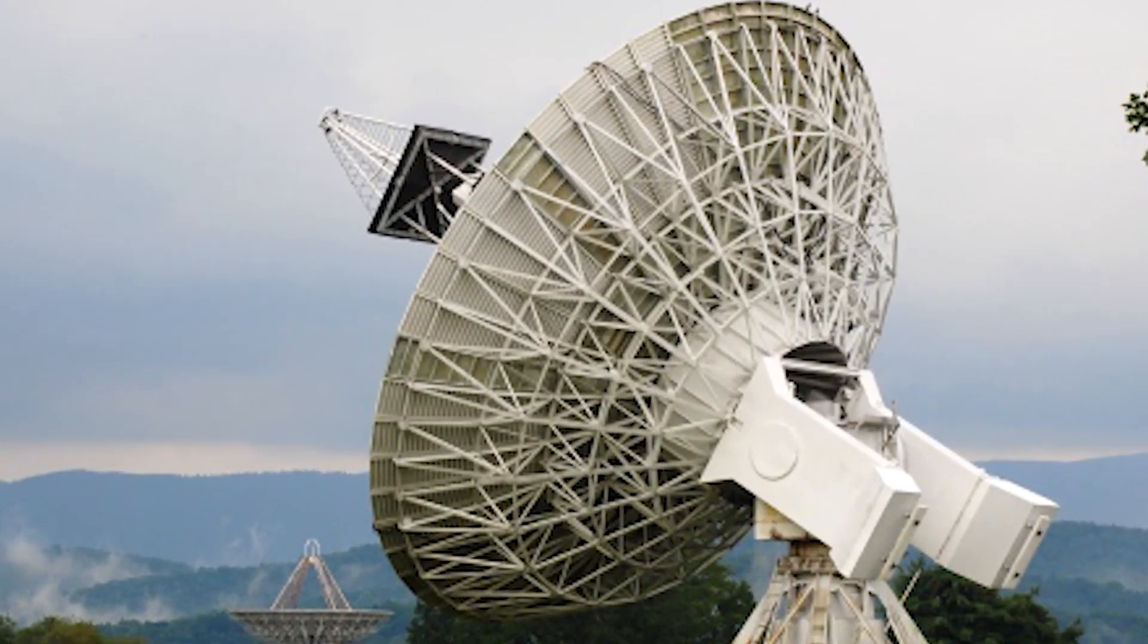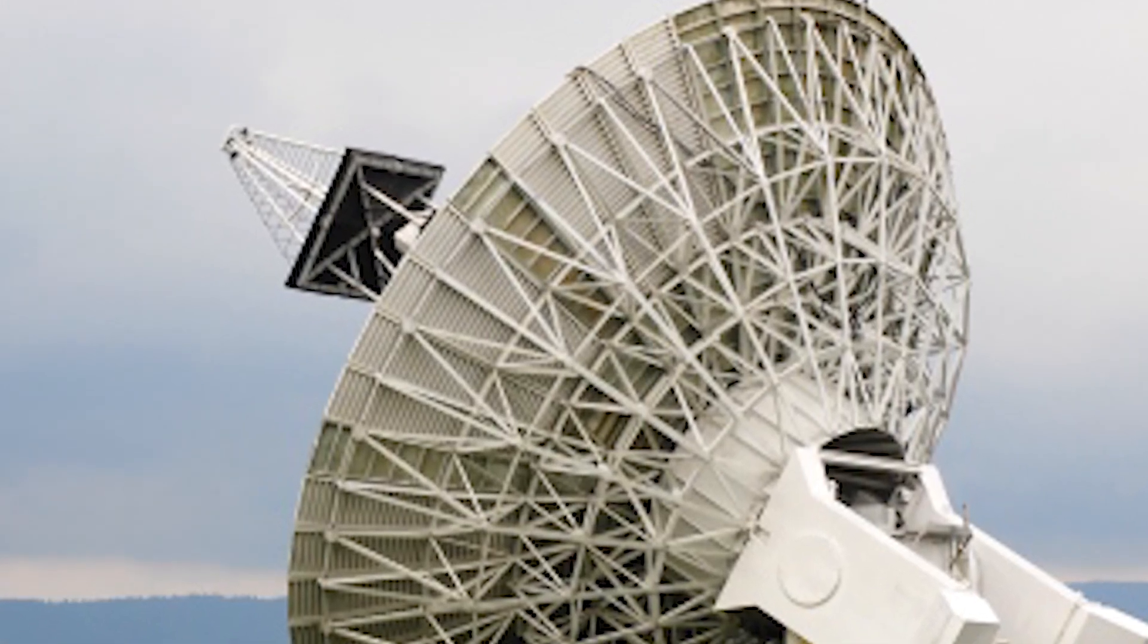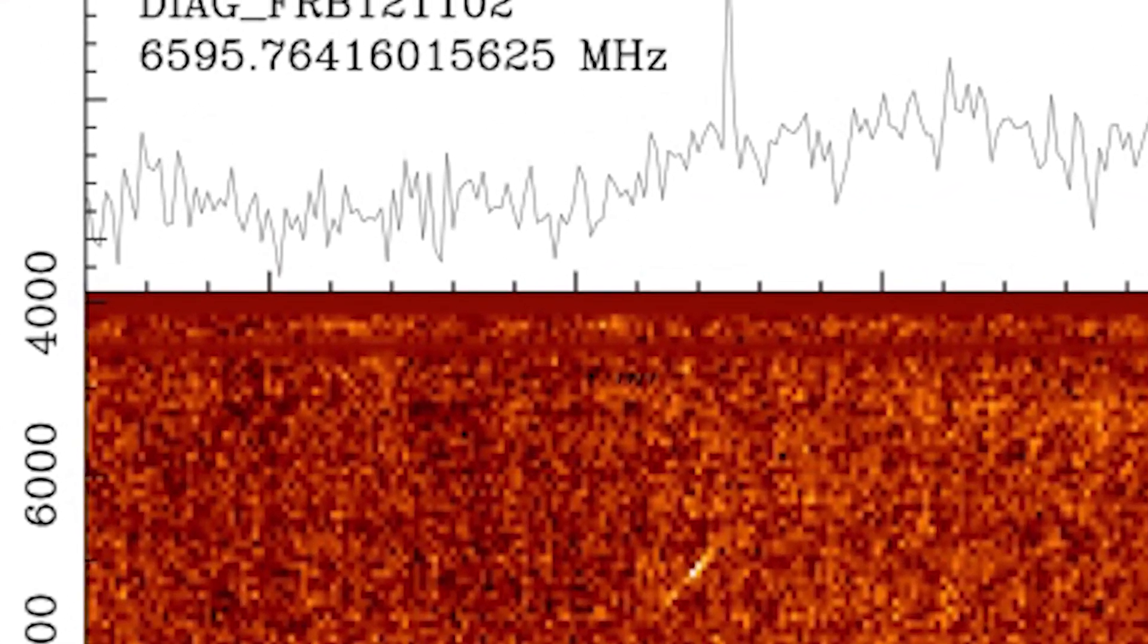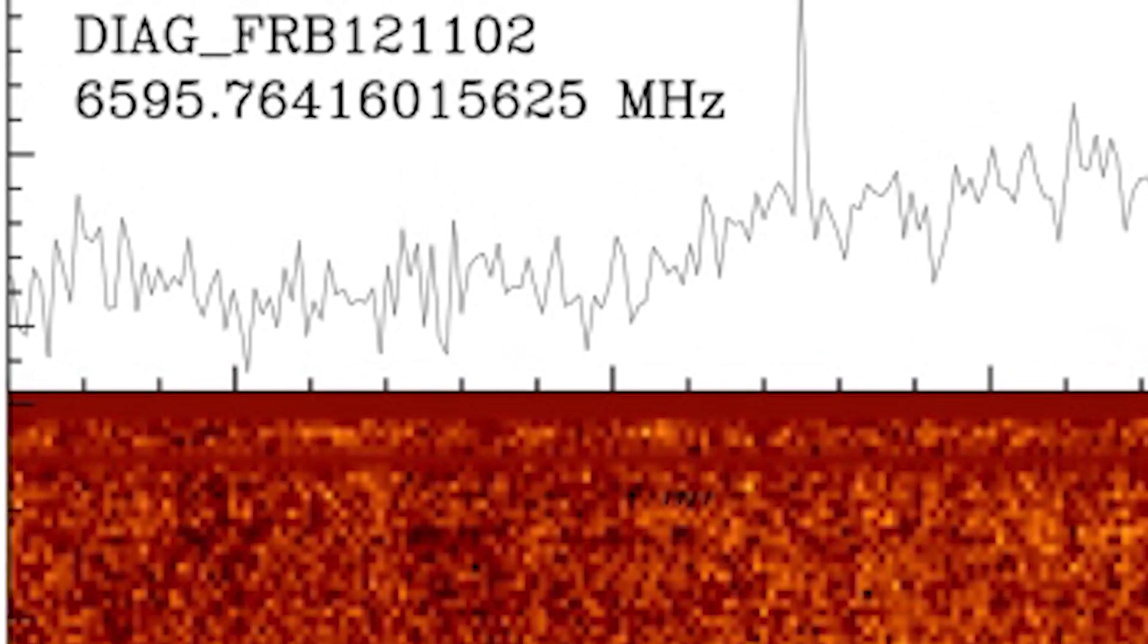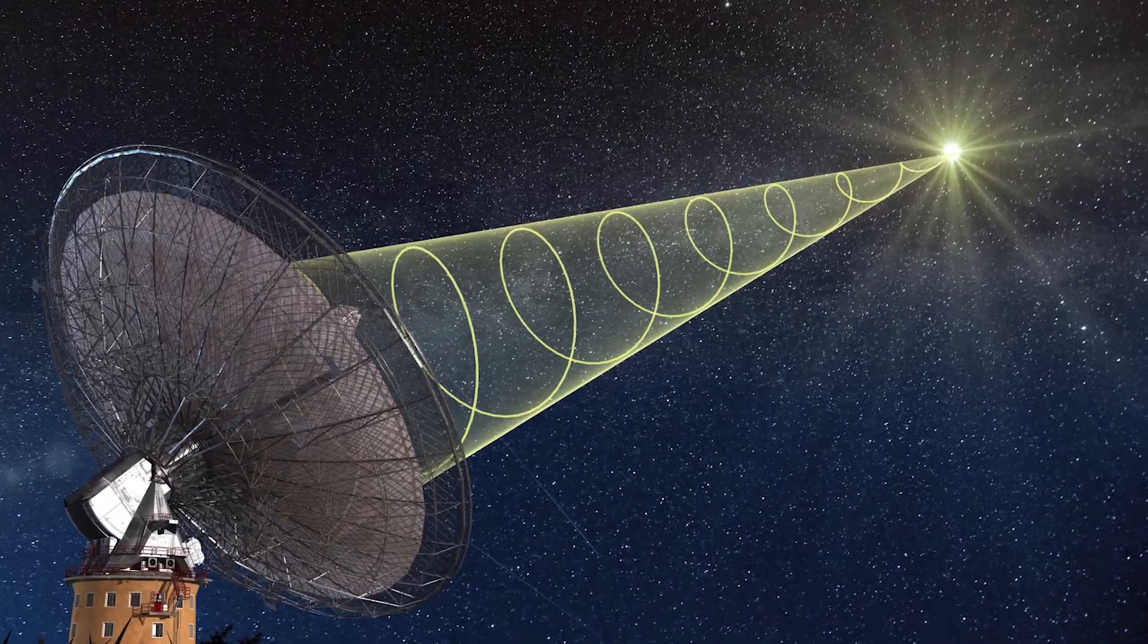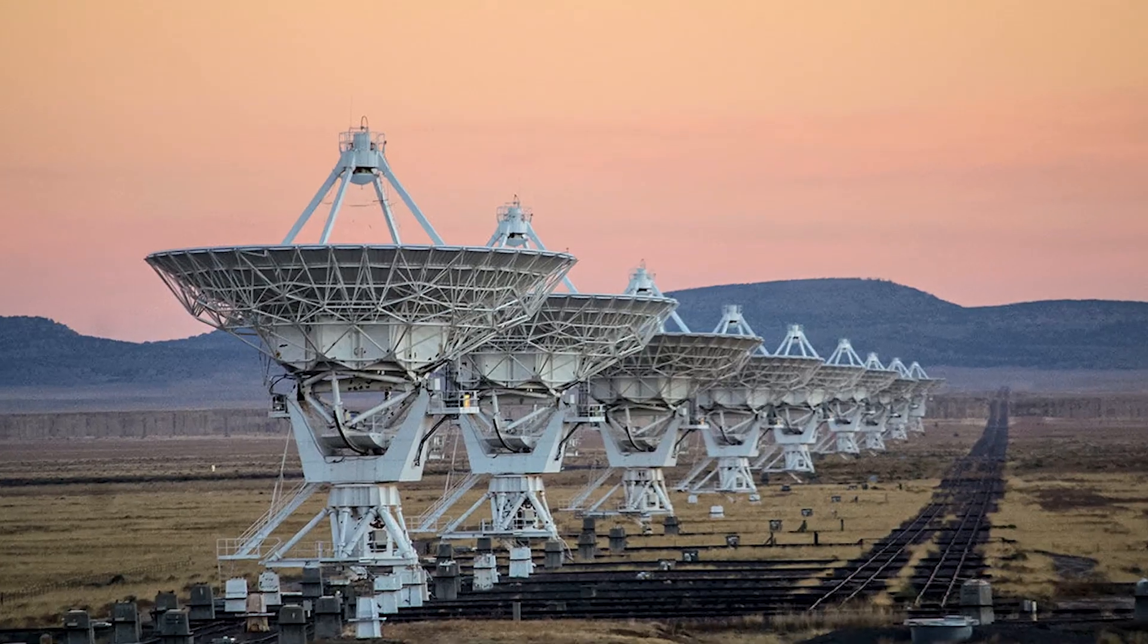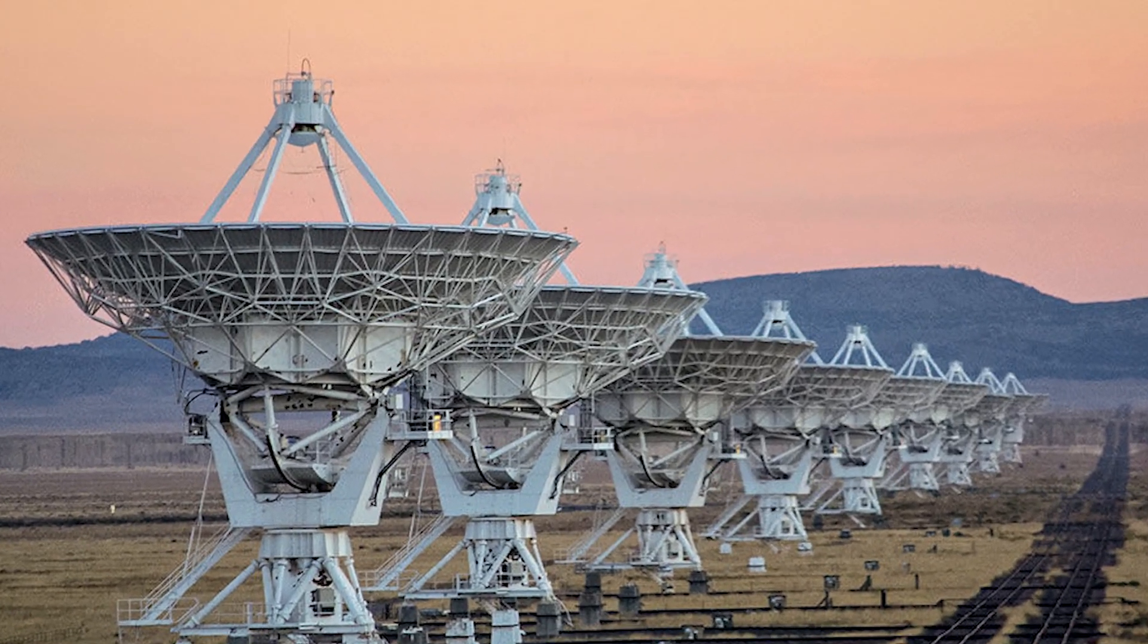But the strange thing about the 15 radio bursts that were detected using the Green Bank telescope in West Virginia is that they were pulsating, like repeating, almost as if they came from something artificial. Not only that, but they were found at a higher radio frequency, one that's never been observed before. Most of the time, the source of these radio bursts is also located.